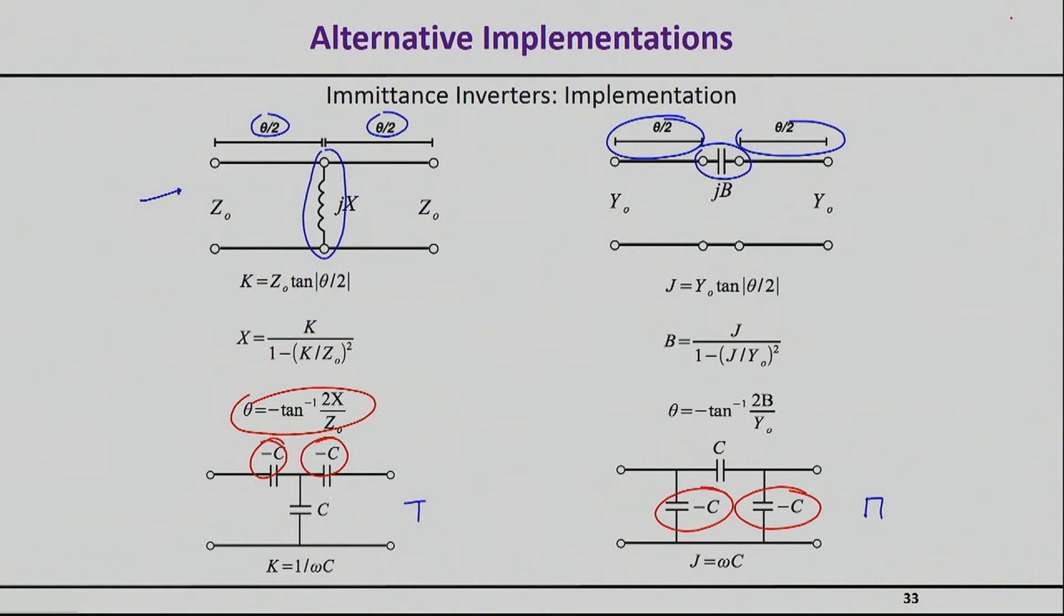But here's what happens. Thank God, these type of negative transmission lines can actually be absorbed in positive transmission lines. So in other words, an inverter is almost never realized by itself. What will happen is that we will have some type of a transmission line on the left-hand side, and some type of a transmission line on the right-hand side. And this type of transmission lines will actually have a positive electrical length.